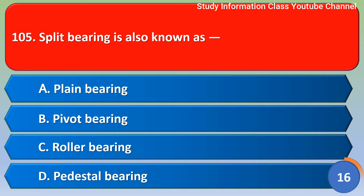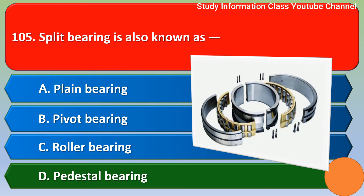Next question: split bearing is also known as — option A: plane bearing, option B: pivot bearing, option C: roller bearing, option D: pedestal bearing. The correct answer is option D, pedestal bearing.